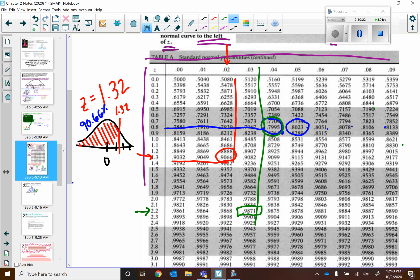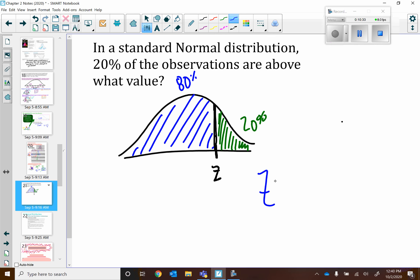So what z-score is that? Well, I look over 0.8. And I look up 0.04. So my answer is a z-score of 0.84, which we kind of actually saw in the last example.